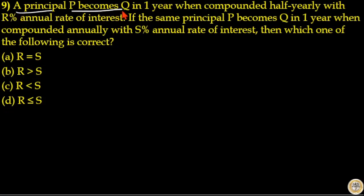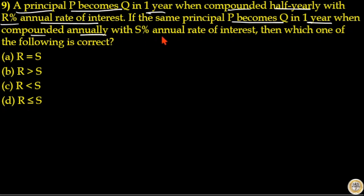A principal P becomes Q in one year when compounded half yearly with R percentage annual rate of interest. If the same principal P becomes Q in one year when compounded annually with S percentage annual rate of interest, then which one of the following is correct?